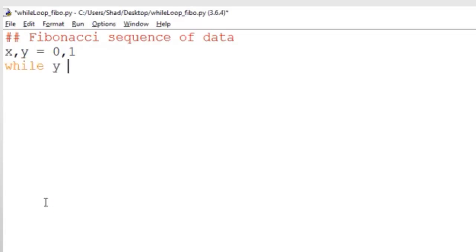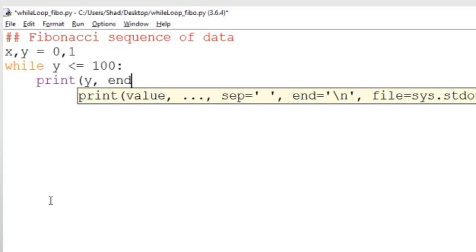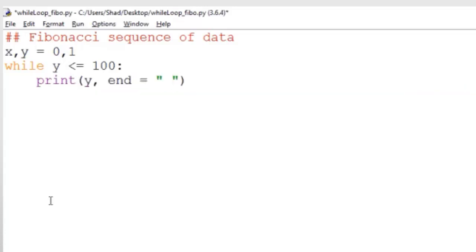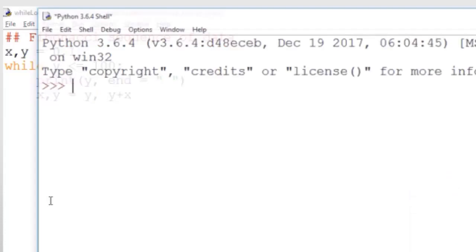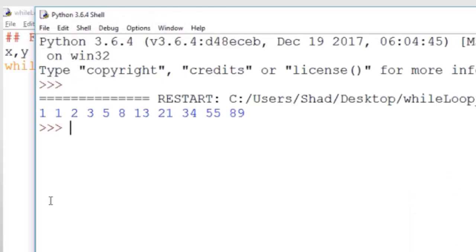We write down while y is smaller than or equal to 100 colon. Print y and then you write end equals to a space in a string format. Then we update this every time the loop restarts. Then we run it and we get the Fibonacci series for a series of numbers that are smaller than 100.